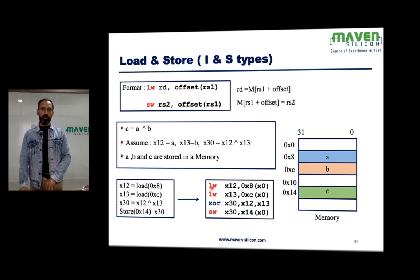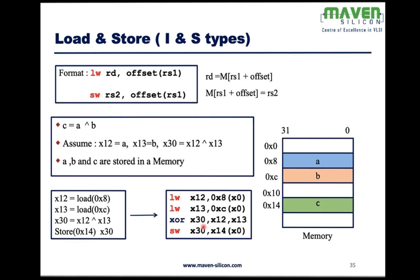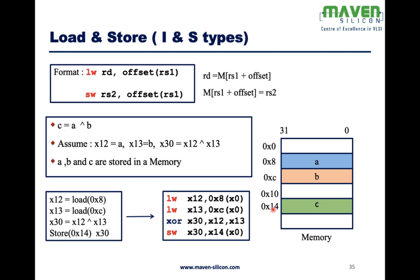We have two load word instructions. The destination register is X12, with an offset of 8 and source register X0. Since X0 is always 0, the address is 0 plus 8 = 8, loading A into X12. Similarly, 0 plus C (hex) loads B into X13. Then XOR is performed between X12 and X13, result stored in X30. Finally, store word puts X30 at address 0x14, storing C in memory.